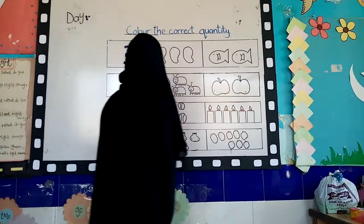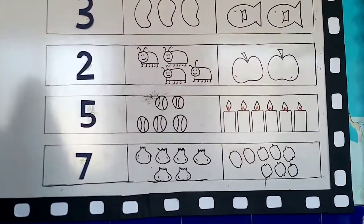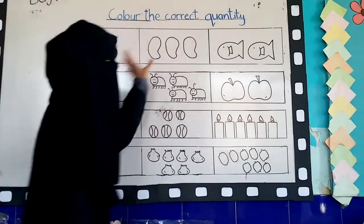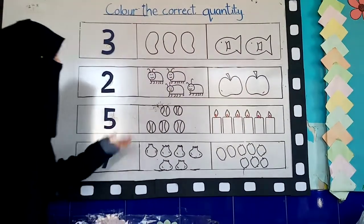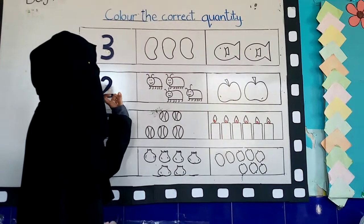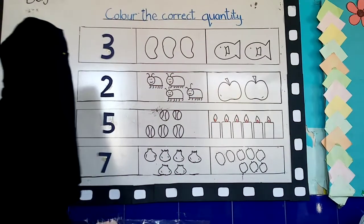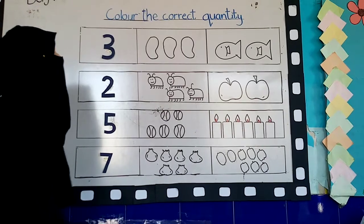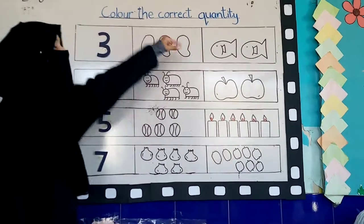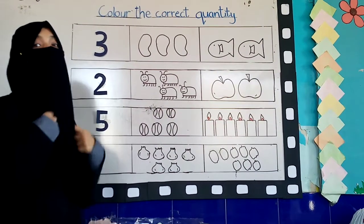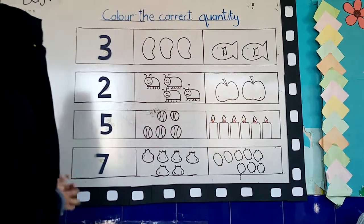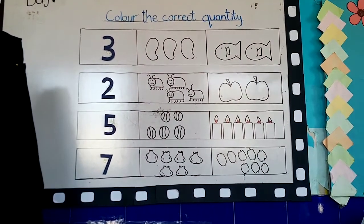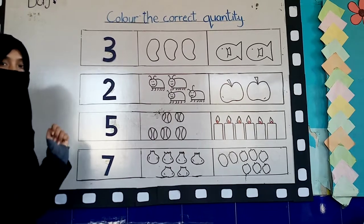Look here students, here are some numbers and some pictures of fruit, candles, oil, insects, apples — different things. So we are going to color the correct quantity. What we are going to do is color the correct quantity. First we have to read these numbers, then we start our work.